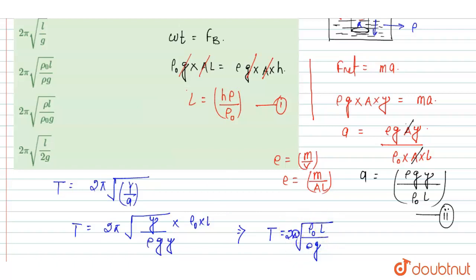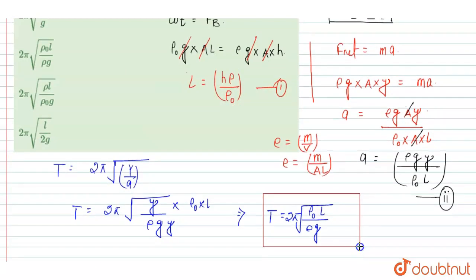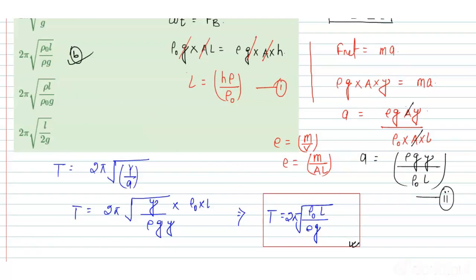This is the value of the time period when the cylinder is displaced by 5 cm. This is the right answer of this question. Looking at the options, option B is the right answer. Thank you.